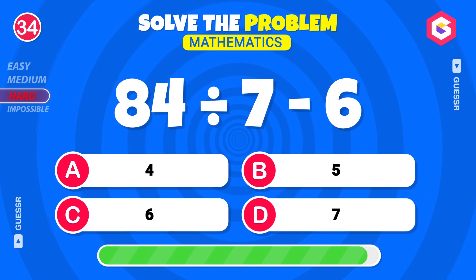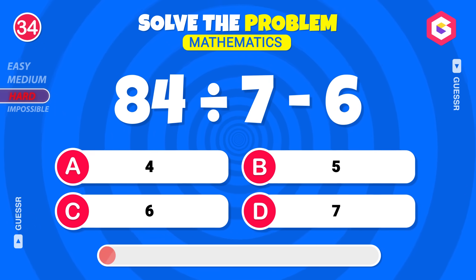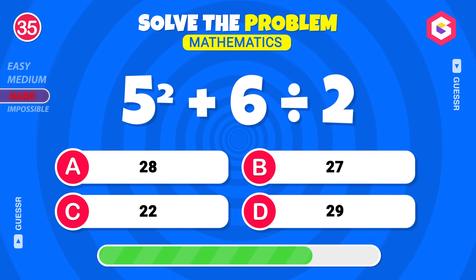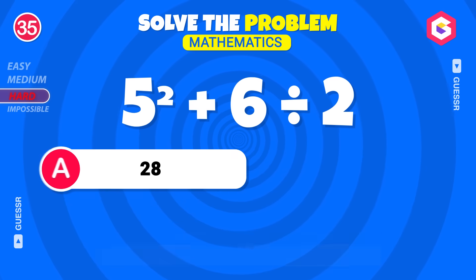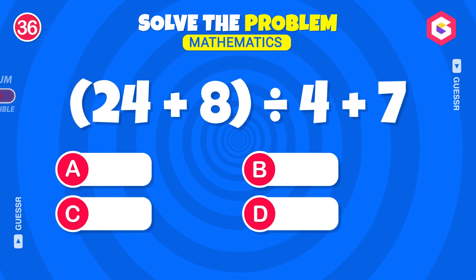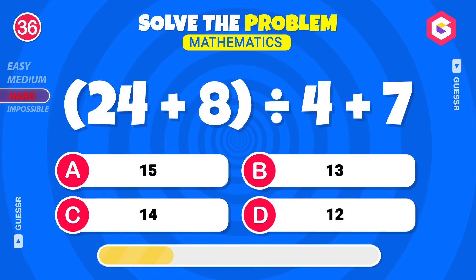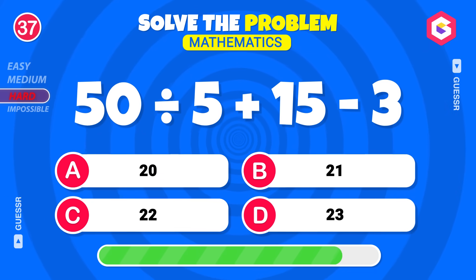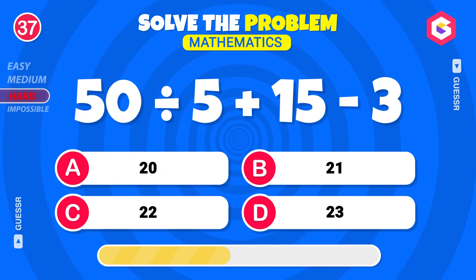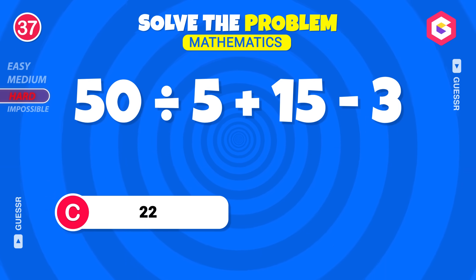Keep going — 6. What's the square of 5, then add half of 6? 28. Solve this one now — 15. 50 divided by 5, then add 15 minus 3. Yes, 22. Only the best can pass this level!